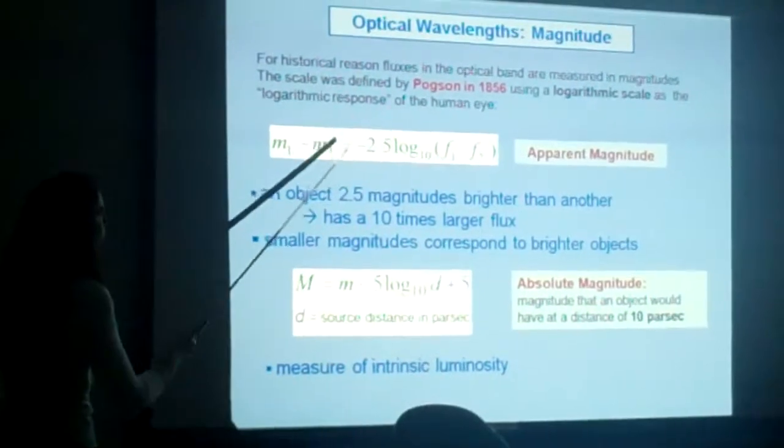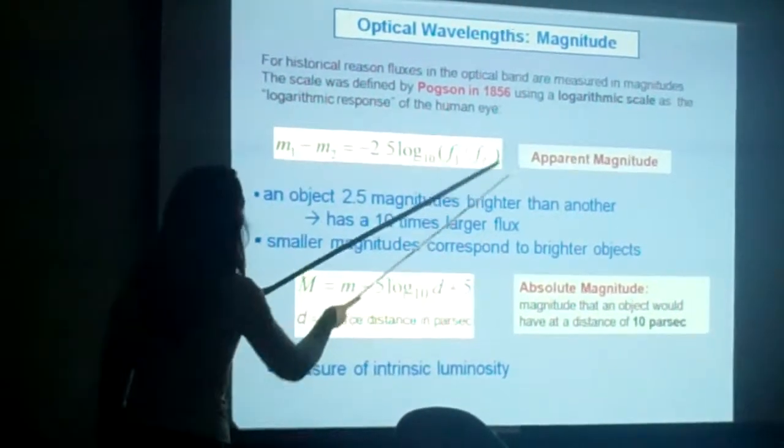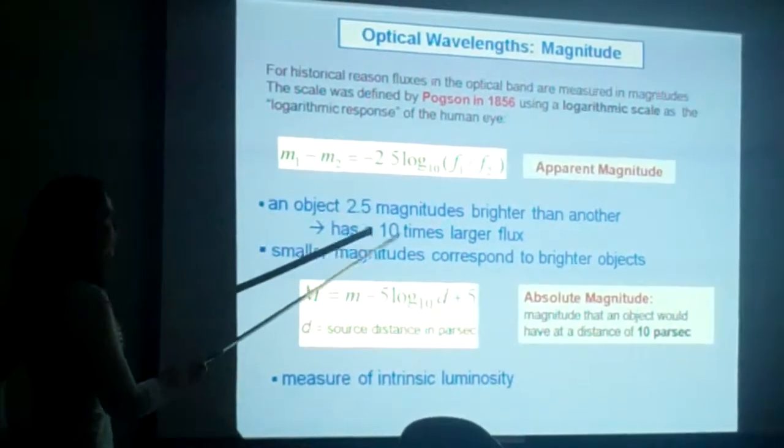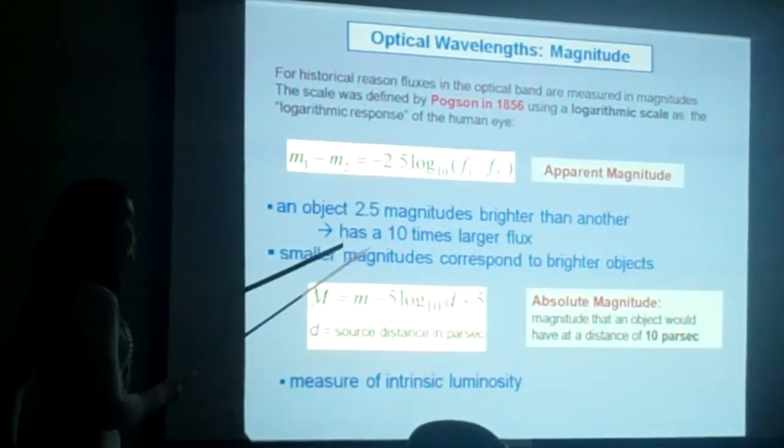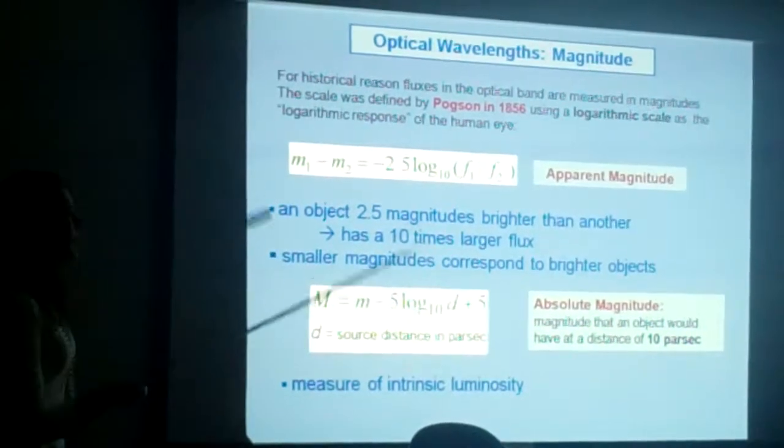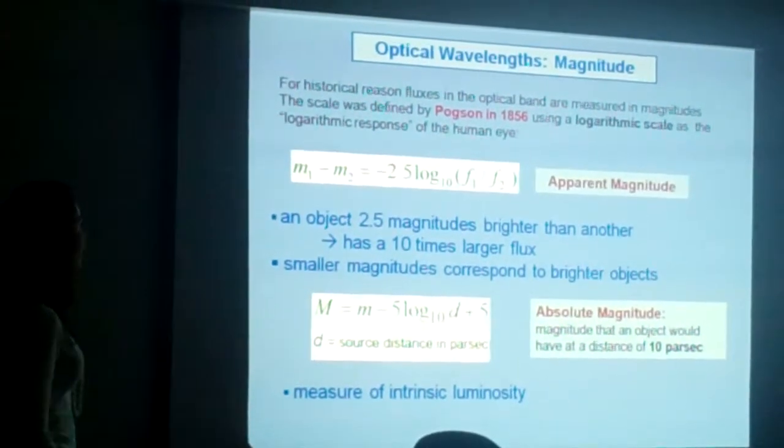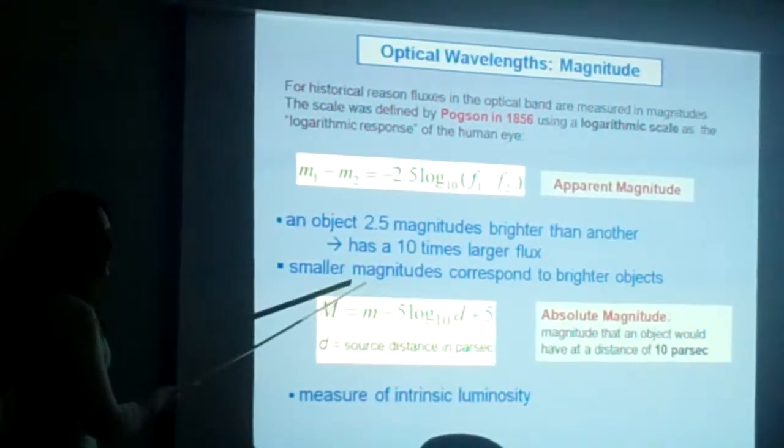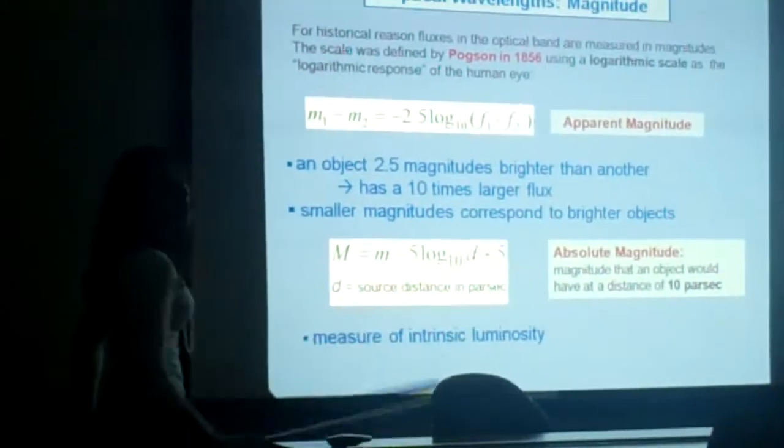What is important is that this is the relation to estimate the magnitude. An object that has 2.5 magnitude brighter than another has a flux that is 10 times larger with respect to the first object. And what is very important is that smaller magnitude corresponds to brighter objects.